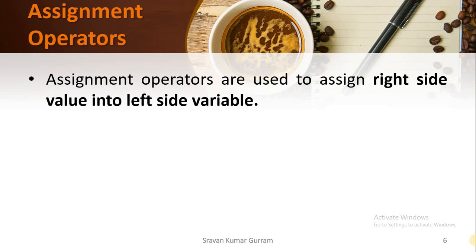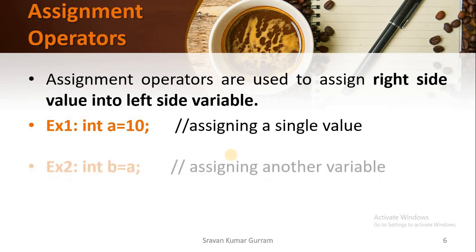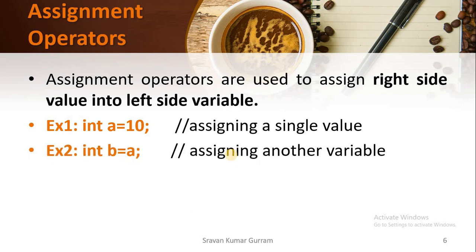As the name suggests, assignment operators are used to assign the right-side value into the left-side variable. See this example: int a = 10. This assignment operator is used to assign the right-side value into the left-side variable. With the help of the assignment operator, we can assign a single value, or we can assign one variable's value into another variable also.